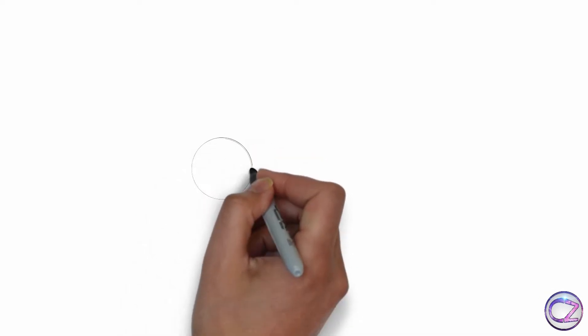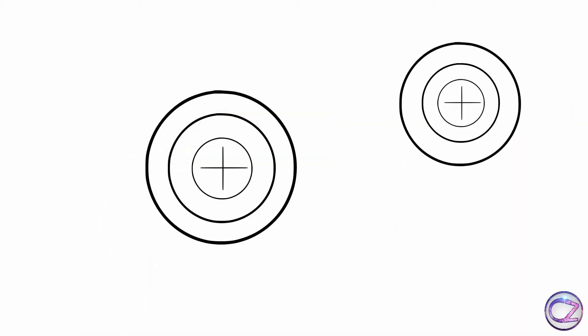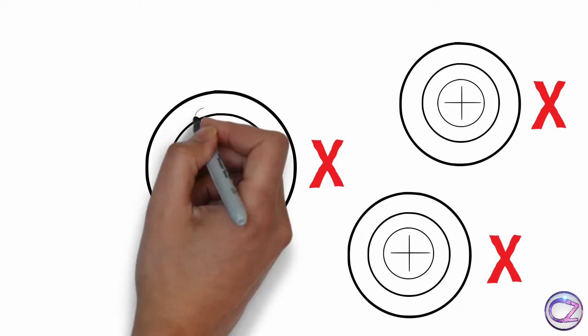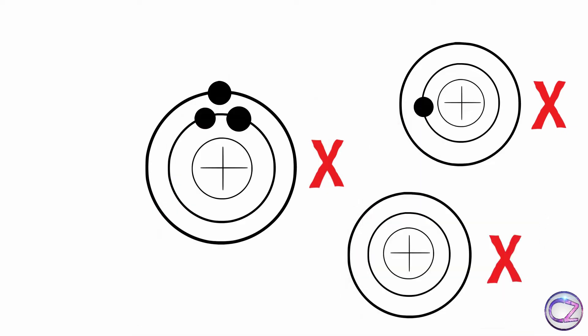Here I am taking an atom. This is the nucleus, this is the first orbit, and this is the second orbit. I am taking the same atom once again. Suppose these atoms are of substance X.